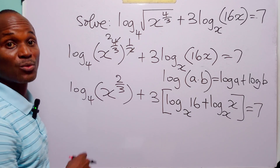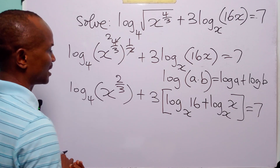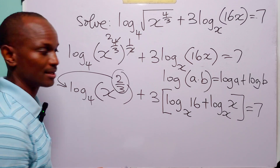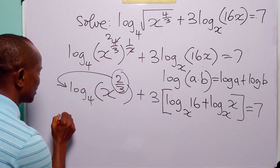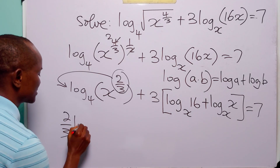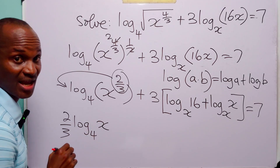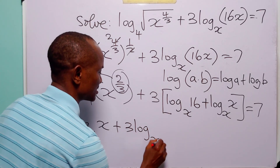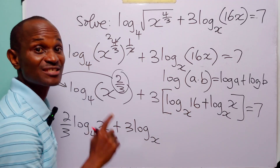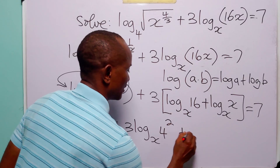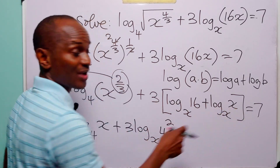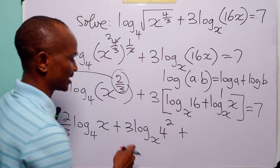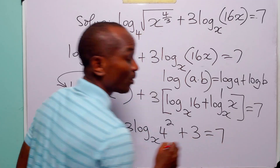The next thing we are going to do is apply the power rule of logarithms to this term — the rule that says we can bring the exponent down to the front of the log term to become a multiplier. So when we apply that rule, we have 2 over 3 times log to base 4 of x. Opening the bracket, this is plus 3 times log to base x of... and you know that log to base x of x is equal to 1, so this is basically 1. 3 times 1 is equal to 3. So here we have 3, and this is equal to 7.